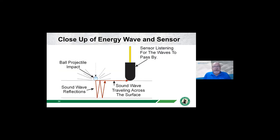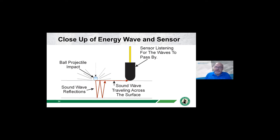The best analogy for wave propagation is dropping a pebble in a pond of water—you see the rings on the surface propagate out in two dimensions from the impact. There's also a vertical component: the echo or reflection of that same energy that goes down and bounces back to the surface, kind of like fish finders or depth sounders locating the bottom of a river or lake. So we have a surface wave traveling along the surface, and from time zero when the energy ball strikes the concrete surface, we've got the reflected energy bouncing off an interface or boundary condition.